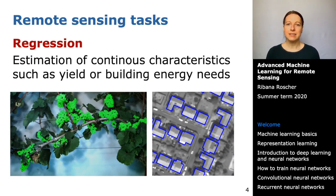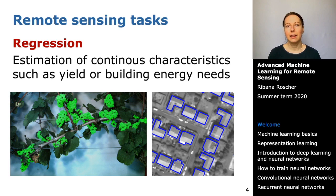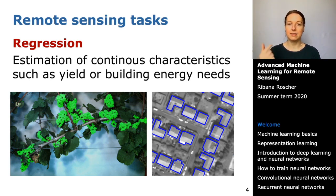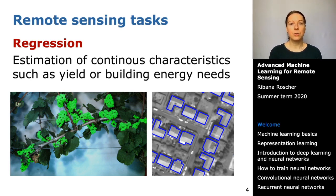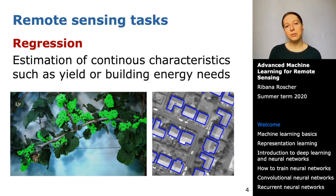Regression is an estimation of continuous characteristics such as yield or energy needs per building. You can see here two examples. The left image shows the detection of grapevine berries, and based on the number and size of the berries detected we can deduce the yield. The right image shows detected buildings in a satellite image, and based on the size of the buildings we can derive parameters such as building energy needs.